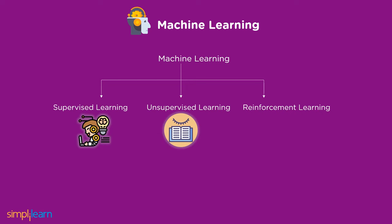The third type of machine learning is reinforcement learning. Here, the agent learns from feedback — it learns to behave in a given environment based on actions and the result of those actions. This feature can be observed in robotics.